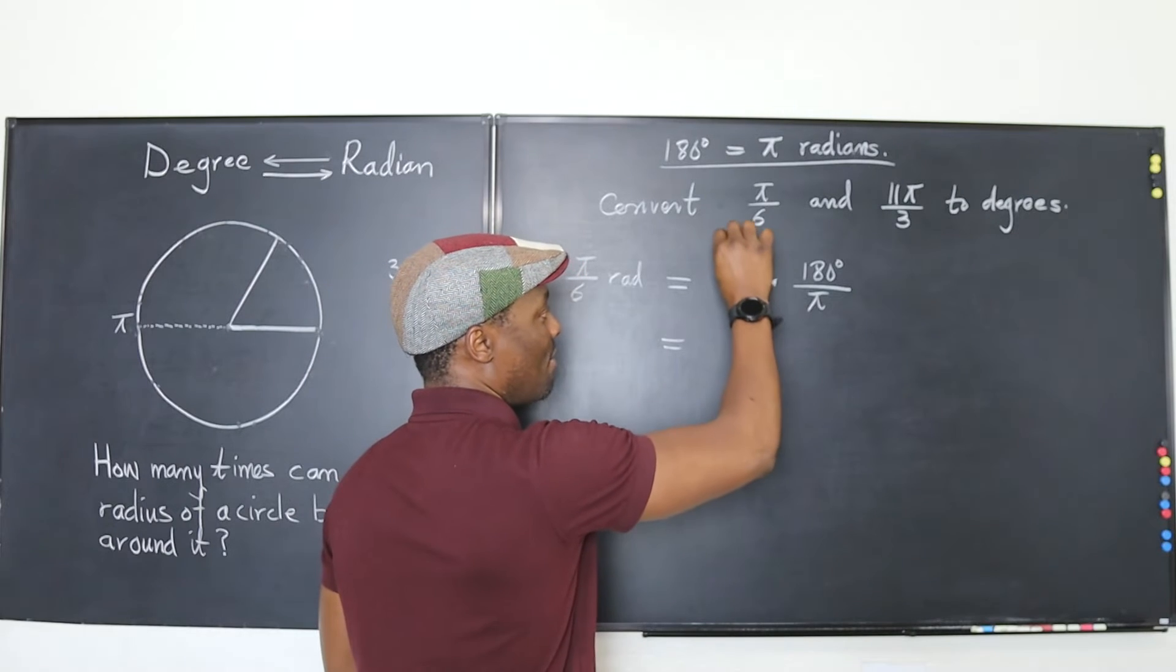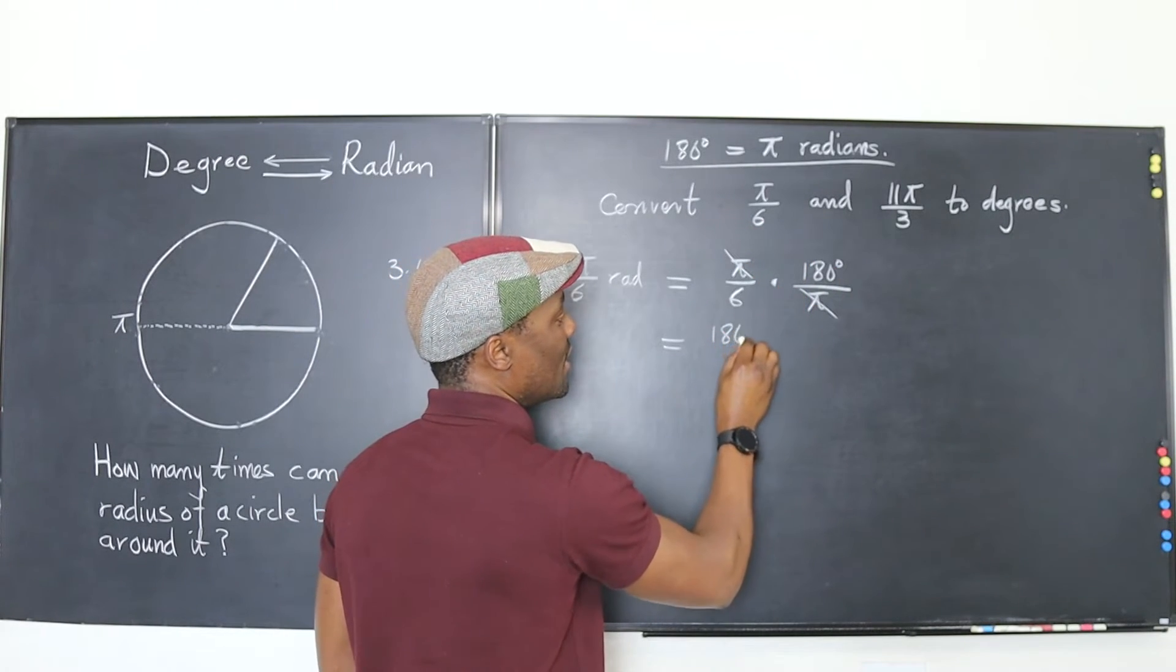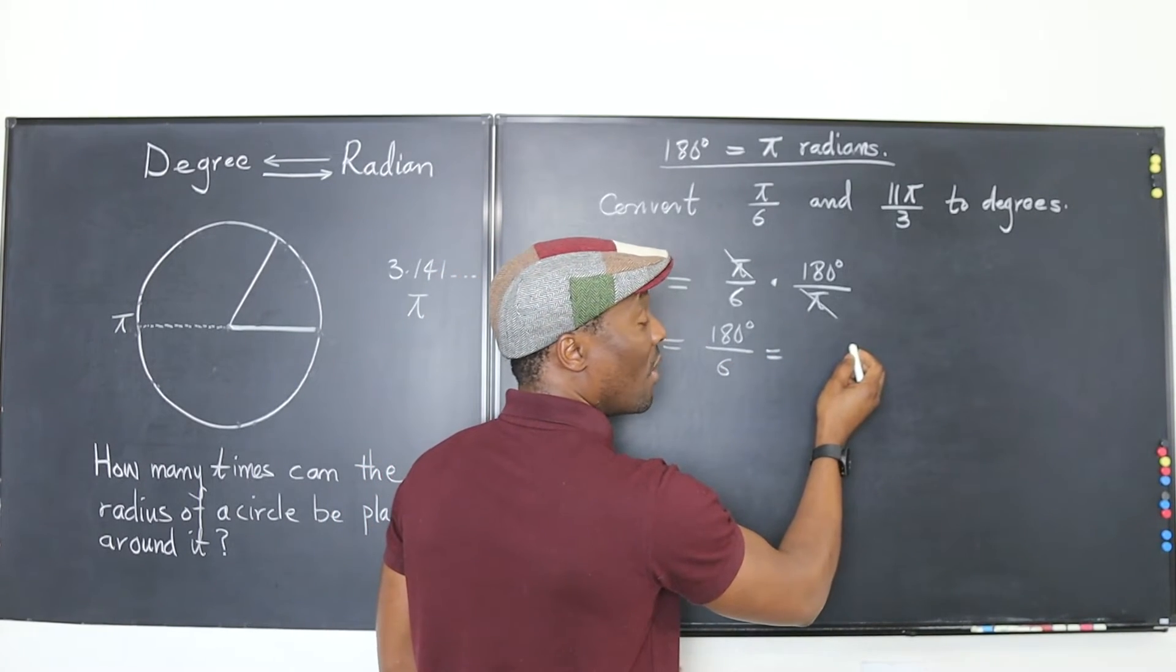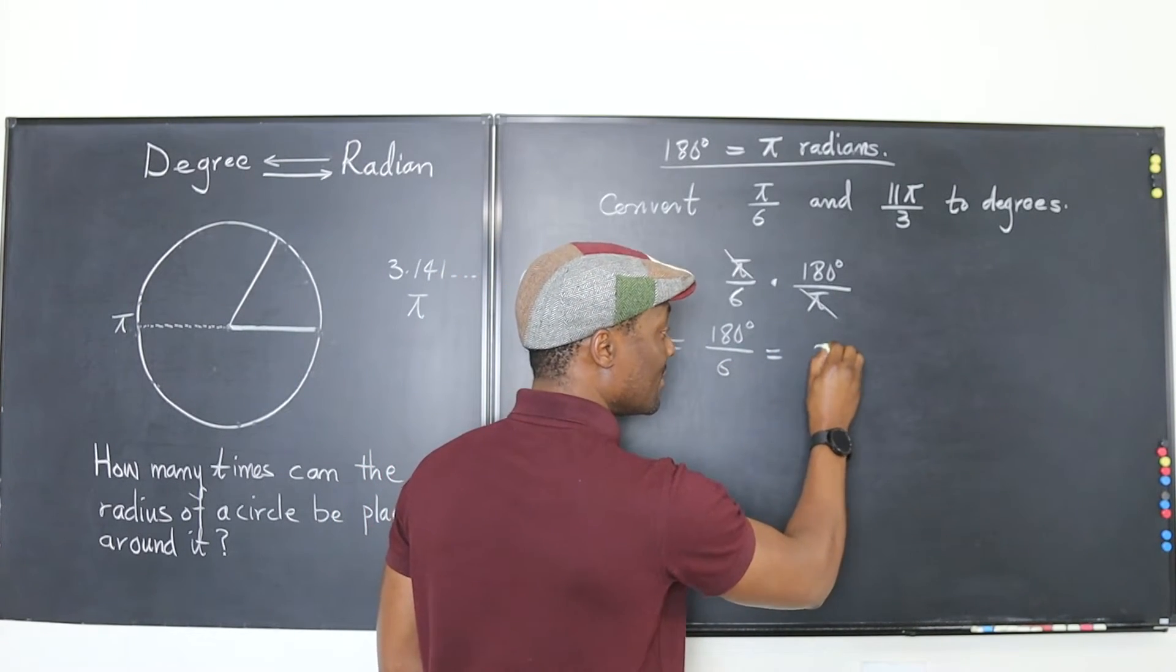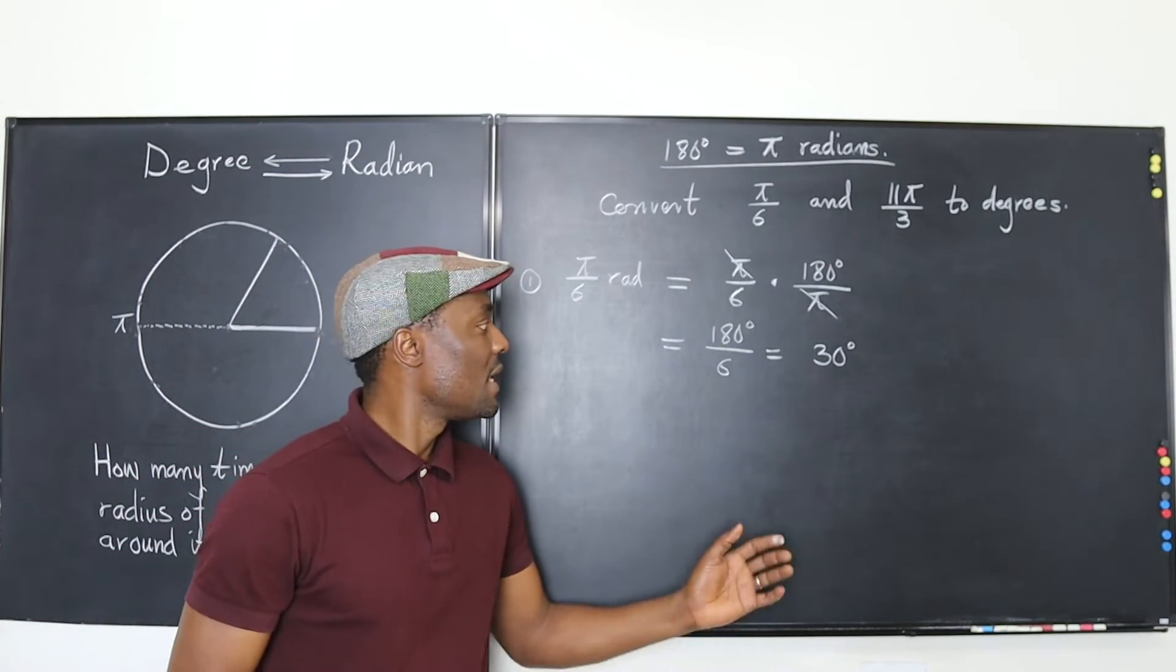So at this point, this pi cancels this pi out. And what I have left is 180 degrees divided by 6. And that gives me 30 degrees. So that's basically what you get in this case.